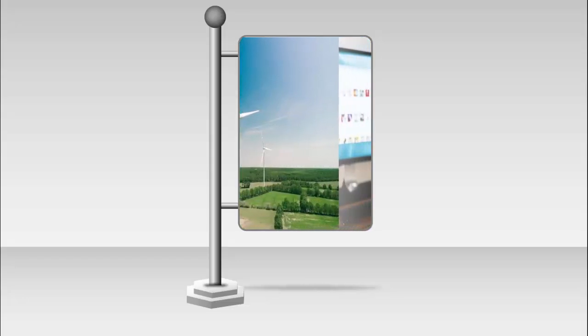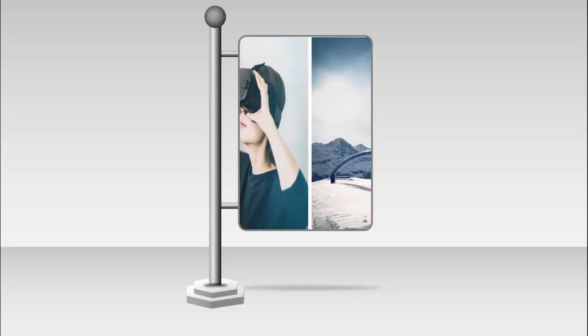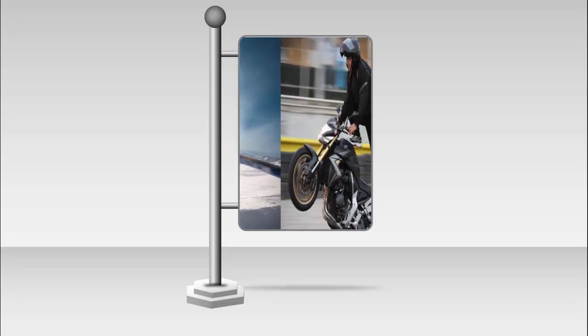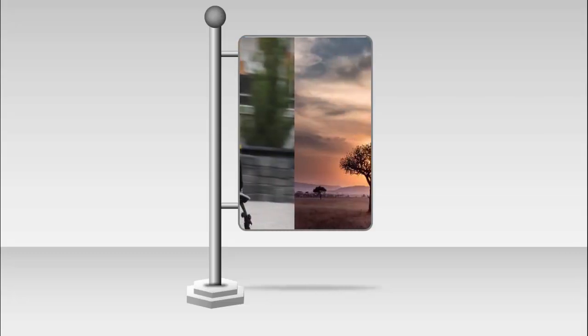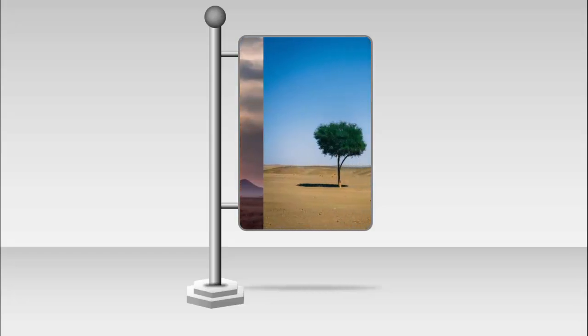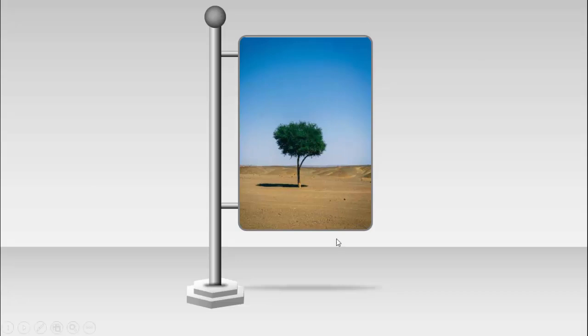In today's tutorial I'm going to show you how to create this advertisement stand or display stand. I've created a metallic stand where you can display images, videos, or text. When you click, the images start moving in — you can use this for a photo album or many different design varieties. You can add as many images as you want and use different kinds of animation. The last image will stop, or it can keep rotating depending on your animation settings.